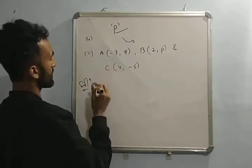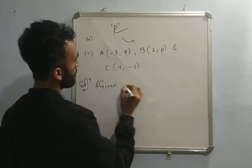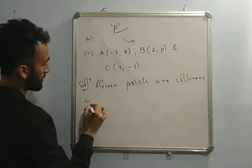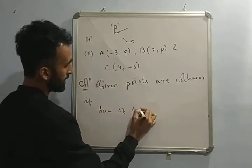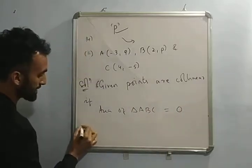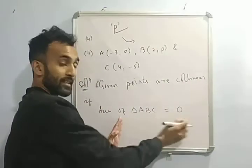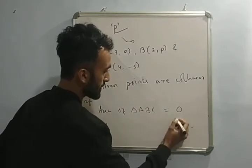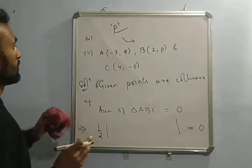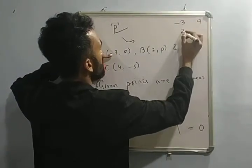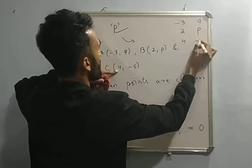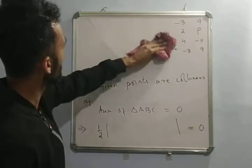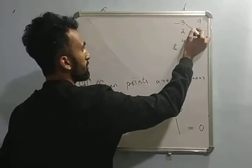Solution. Sub number 2: A is minus 3 comma 9, B is 2 comma P, and C is 4 comma minus 5. P is missing here and I have to find out this P value. So, if area of triangle A, B, C equals to 0, which implies half mode equals to 0. The pattern is: 9, 2, P; 4, minus 5, minus 3, 9.